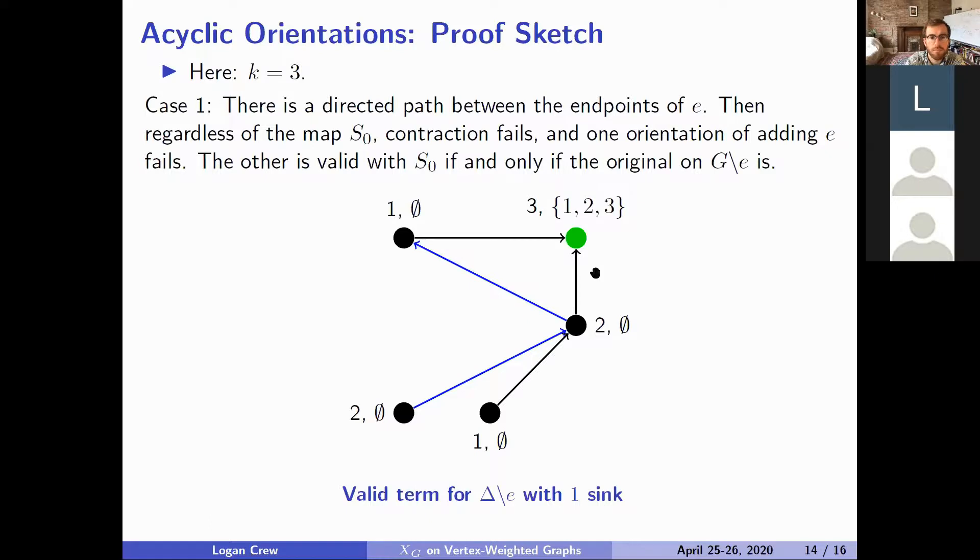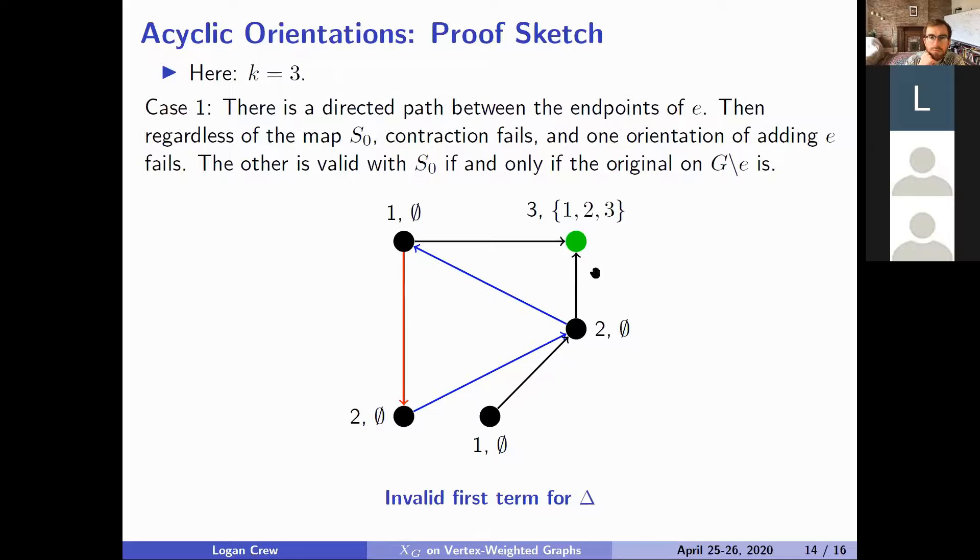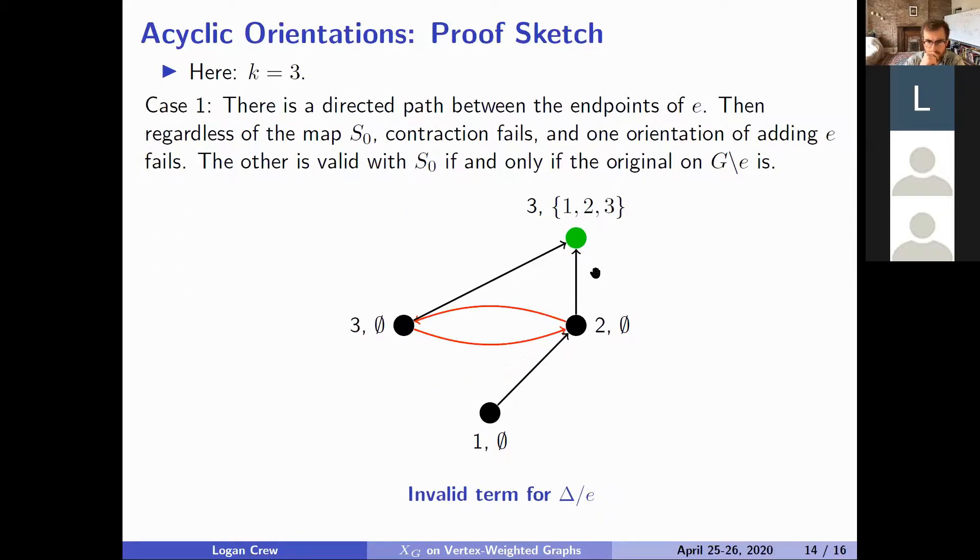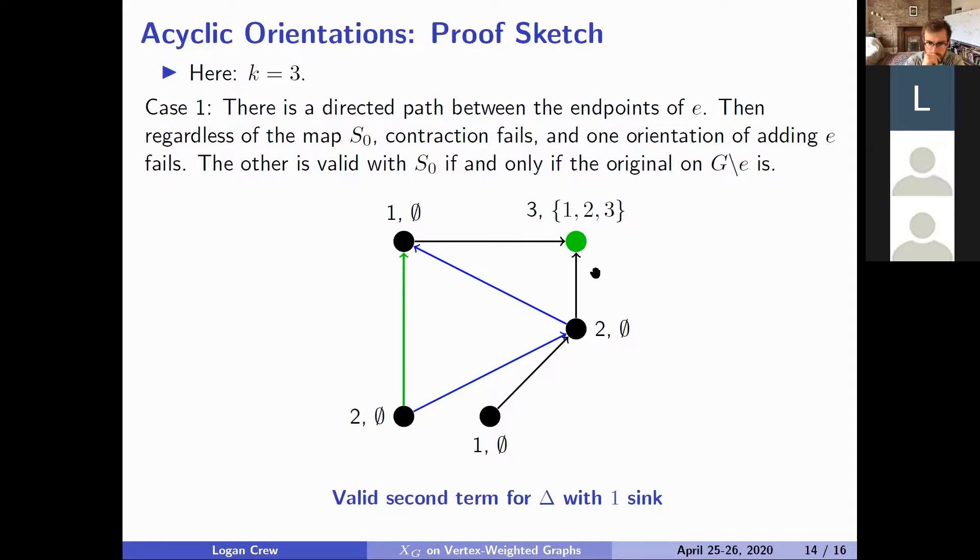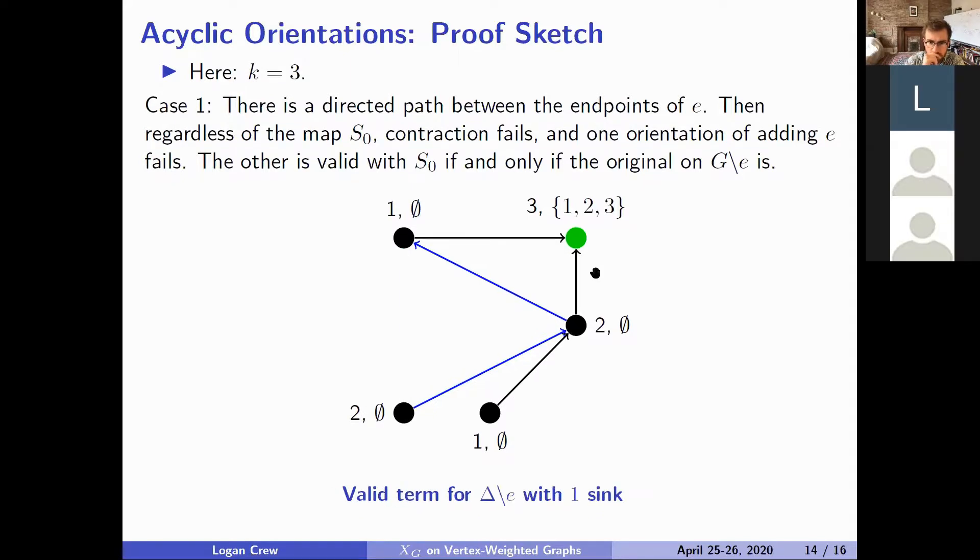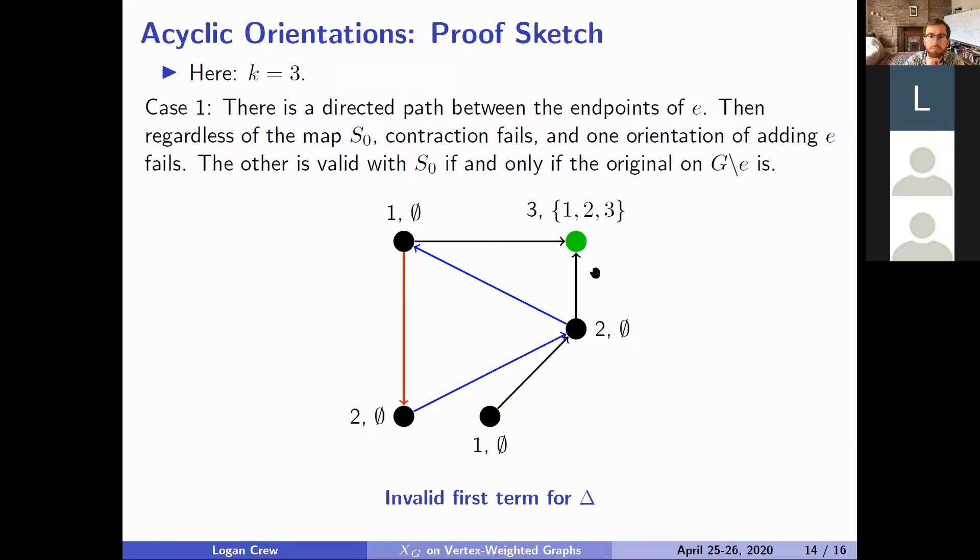I'll briefly show one case of this. I'll very briefly sketch this out so this is an example where we have a directed path between the endpoints of e. In that case there's one sink and that sink is assigned the total set one two three and this is on g delete e. And g contract e this is invalid because there's a cycle no longer acyclic. This is valid and it still works. This is invalid because it's not acyclic so we had one term on g and we had one term on g delete e and they have the same number of sinks so our thing checks out for those orientations coming from this particular acyclic orientation and sink map. And you can check basically as a case by case basis that this works for all of these possible cases. It's a proof of this that just uses that.